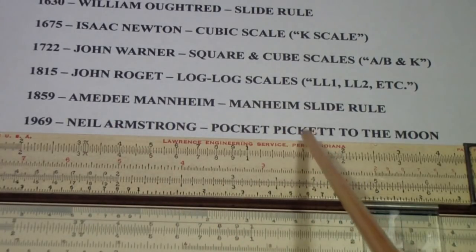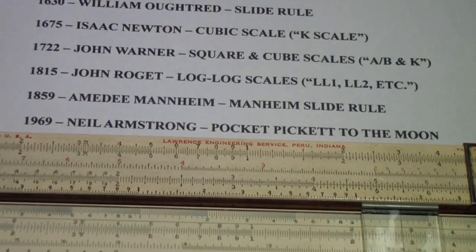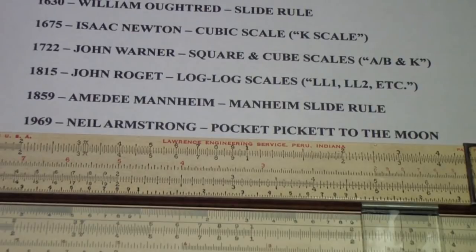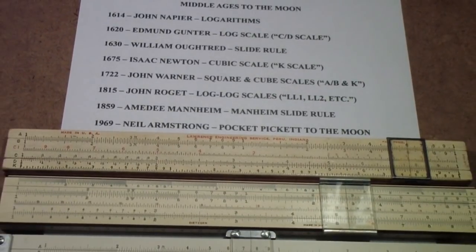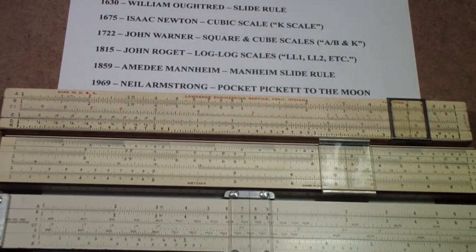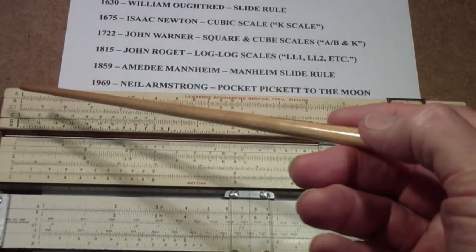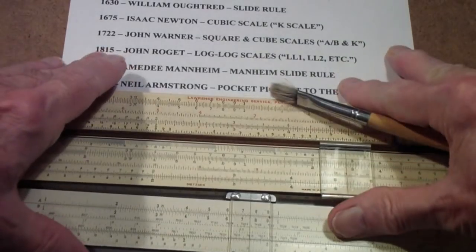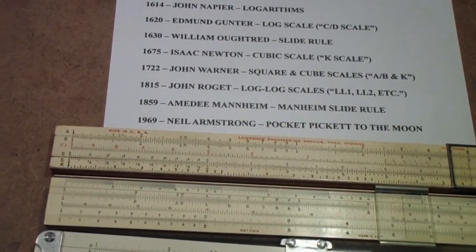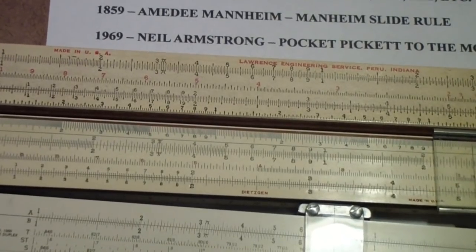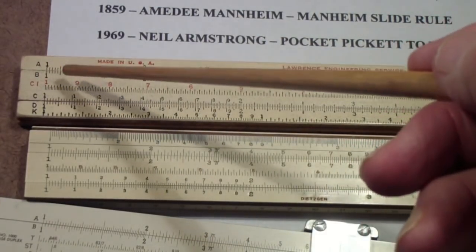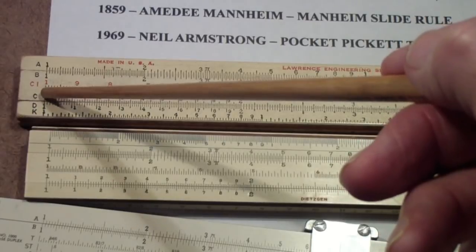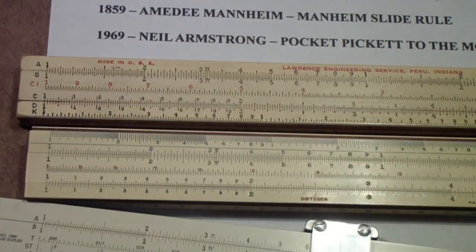And he actually used the Picket slide rule to double check those calculations. So, I mentioned earlier the Mannheim slide rule, and these first two slide rules here are essentially Mannheim slide rules. They consist of, let me zoom in a little better on the ends of these. An A scale, a B scale, a CI scale, and then a C and D scale, and a K scale. Now, we're going to talk about these in a little bit, if I haven't bored you by now.